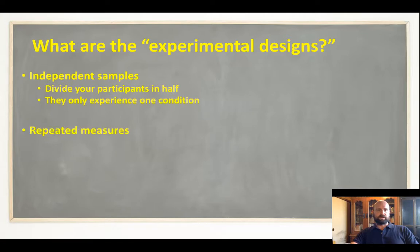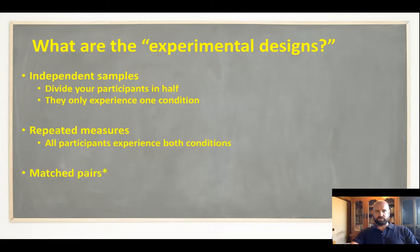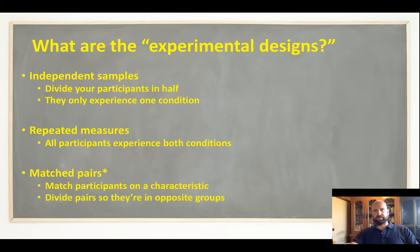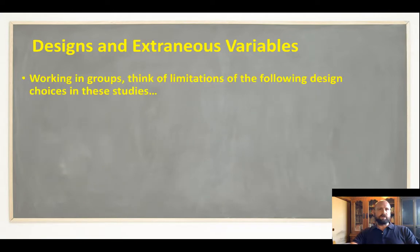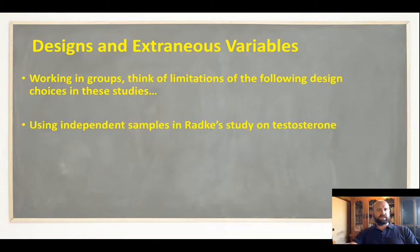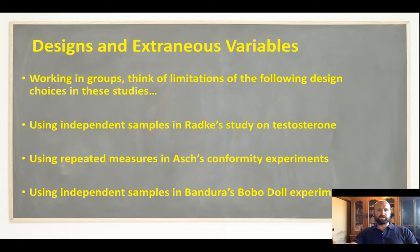Just to recap: if you've done quantitative methods in chapter six already, this will just be recap, but it's a good one to revisit. What are the experimental designs? What does that mean? We can explain that, and here's my comment about matched pairs and why I don't recommend it. Here's an activity to get students thinking — if we were to use these designs with these particular studies, what might some of the limitations be?